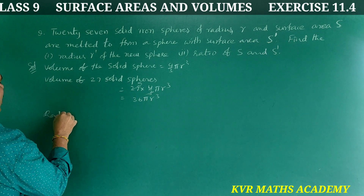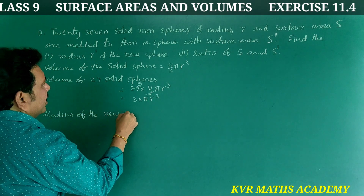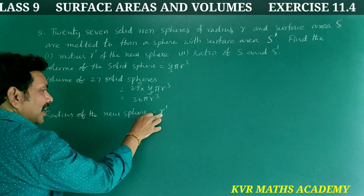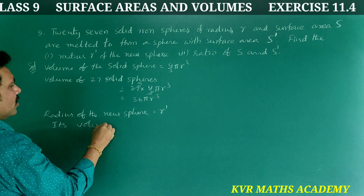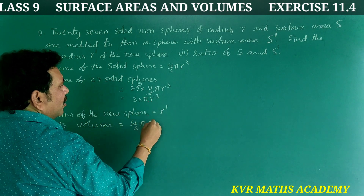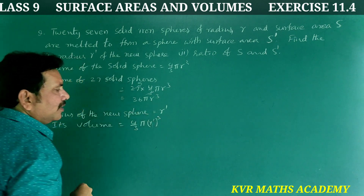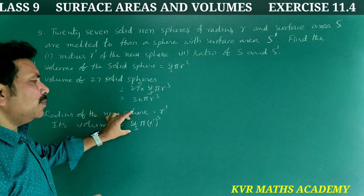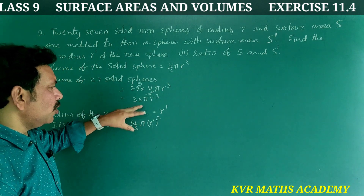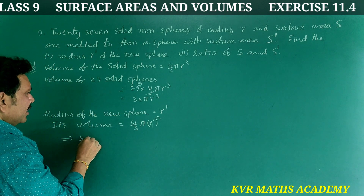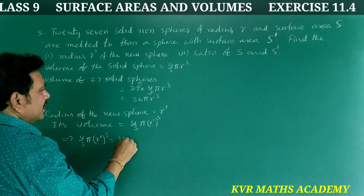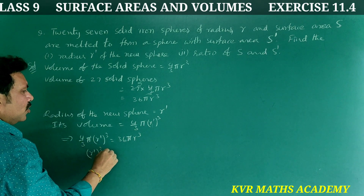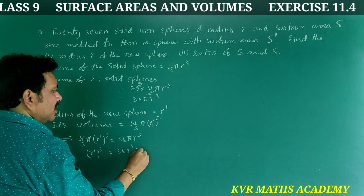The radius of the new resultant sphere is r dash. Its volume is equal to 4 by 3 pi r dash cube. Setting volume of 27 solid spheres equal to the resultant sphere: 4 by 3 pi r dash cube equals 36 pi r cube. Cancelling pi from both sides, r dash cube equals 36 r cube into 3 by 4.